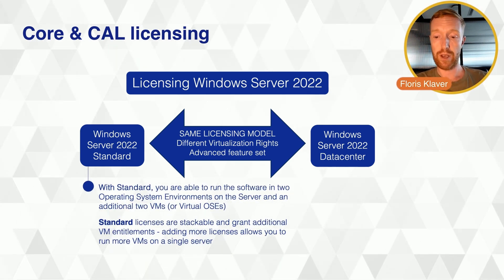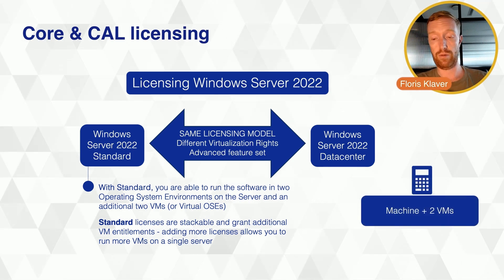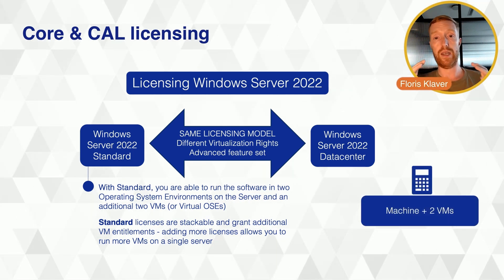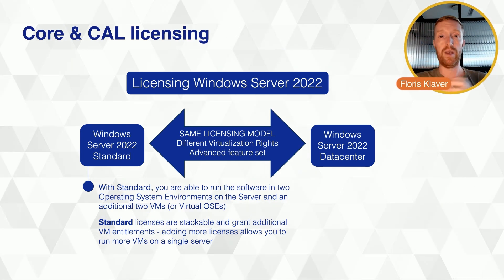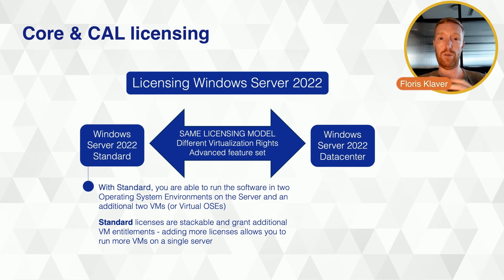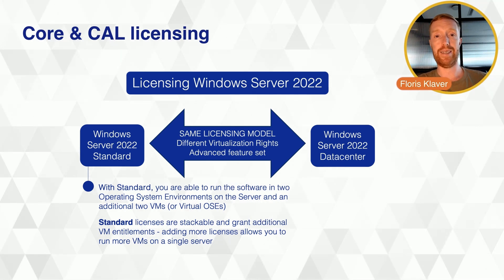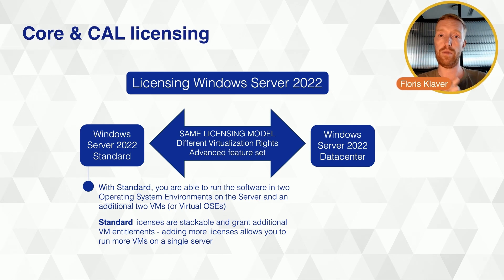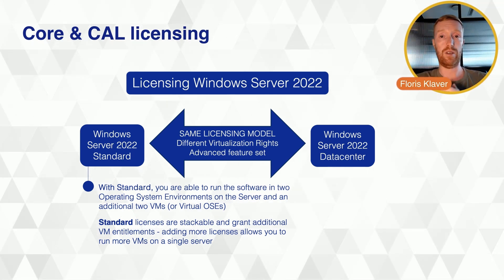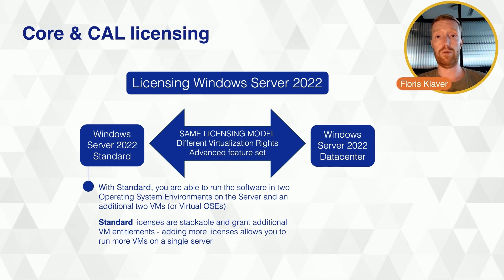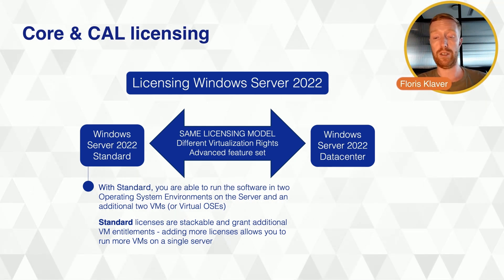With Windows Server Standard Edition, you're able to run the software in two operating system environments on your server and an additional two VMs or virtual operating system environments. If I license my Windows Server with Standard, I get to run an additional two virtual machines, and those virtual machines should have the same core count as the physical machine licensed. However, these licenses are stackable, so you can add multiple Standard licenses to cover additional virtual machines above the two granted.